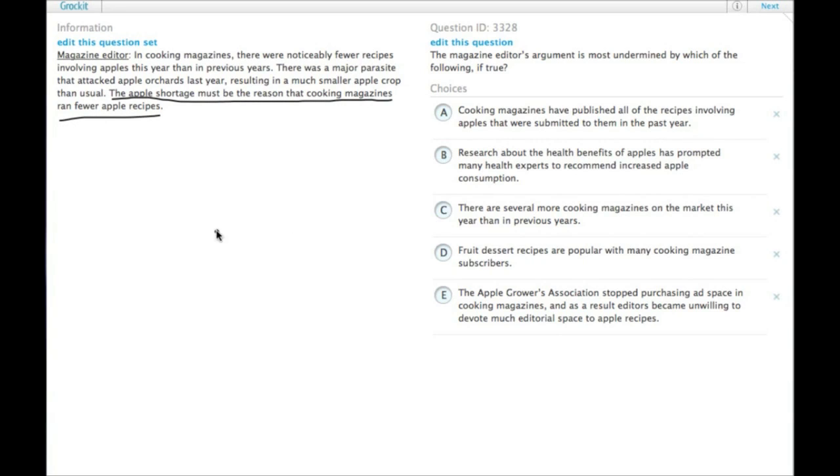So this is a causal argument where we have X causing Y. To weaken it, you either need to say it really wasn't X causing Y, or you need to say it was actually Y causing X. In this case, that would be that fewer apple recipes caused an apple shortage, which quite frankly doesn't seem that likely, so it's not going to be number two.